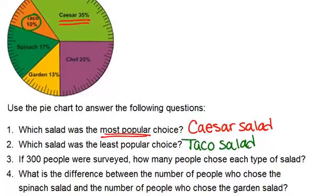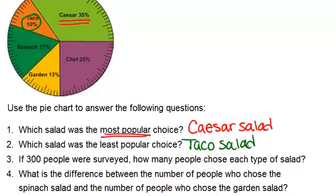And we have a couple more questions. If 300 people were surveyed, how many people chose each type of salad? So remember that from the pie chart, we don't know how many people were surveyed. We only know the percentages. So here it's telling us that there are 300 people. So we have to go back and figure out,